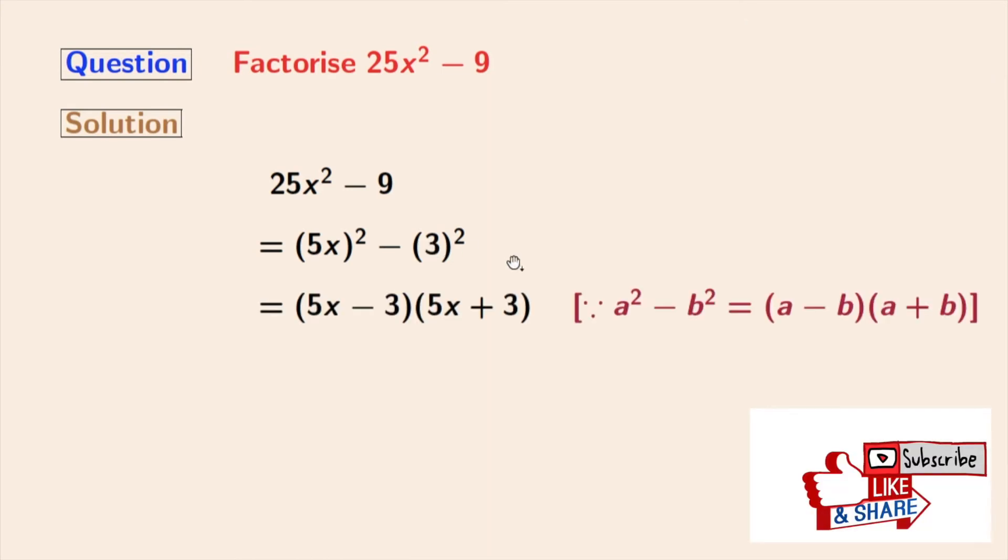So we will now apply the formula of a² minus b² in this expression. Applying that we will get this equal to 5x minus 3 times 5x plus 3.